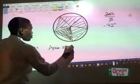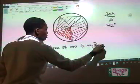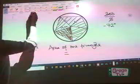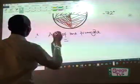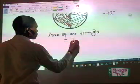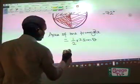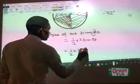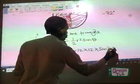Area of one triangle. Area of one triangle will be equal to what? Let's check it out. You already have the answer to that. That will be the formula is half r squared sine theta. So that will be half times 12 times 12 times sine 72 degrees.